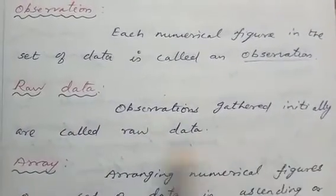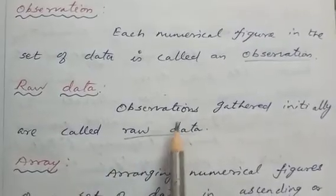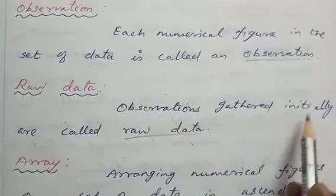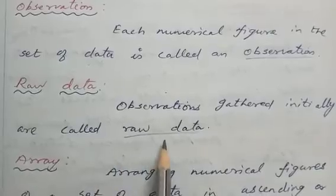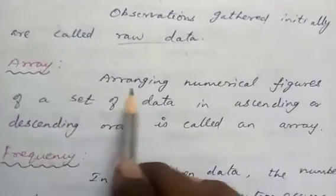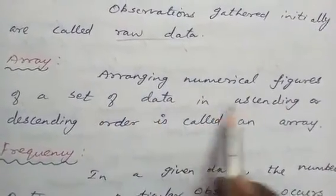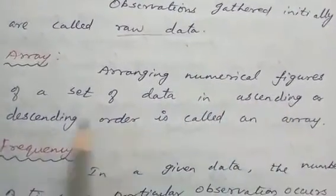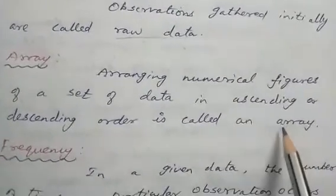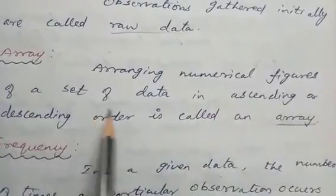The next one is raw data — observations gathered initially are called raw data. The next one is array — arranging numerical figures of a set of data in ascending or descending order is called an array.